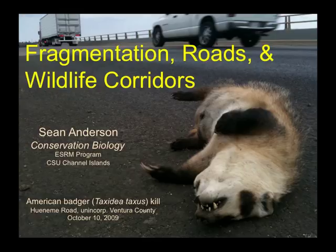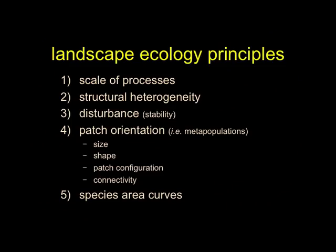Roads are a real challenge for mobile animals. As we've been saying the last couple lectures, these landscape ecology themes keep popping up: the scale at which something is happening — energy flowing, animals moving — spatial heterogeneity, disturbance and stability. Now that we've had our metapopulations discussion, patch orientation starts to make sense: do we have patches in a daisy chain or scattered across the landscape? And species-area curves tell us that as we sample larger areas, we get more categories of things.